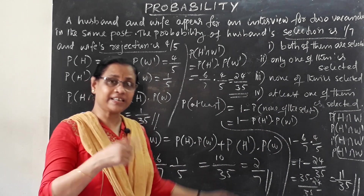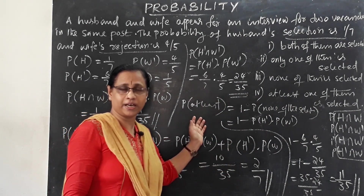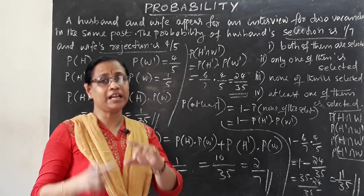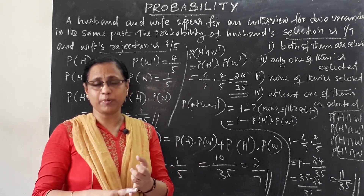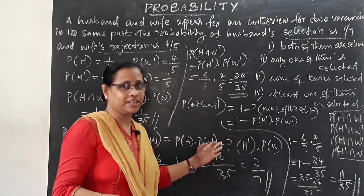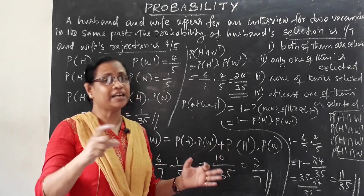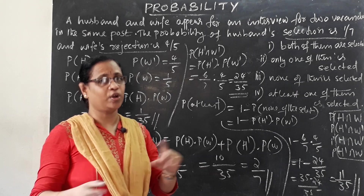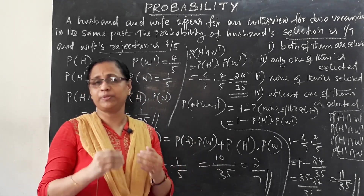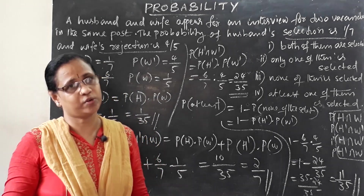This type of problem is very important. We have covered three topics: independent events, conditional probability, and the multiplication theorem. In conditional probability, each event depends on the other, whereas in independent events, they do not depend on each other.